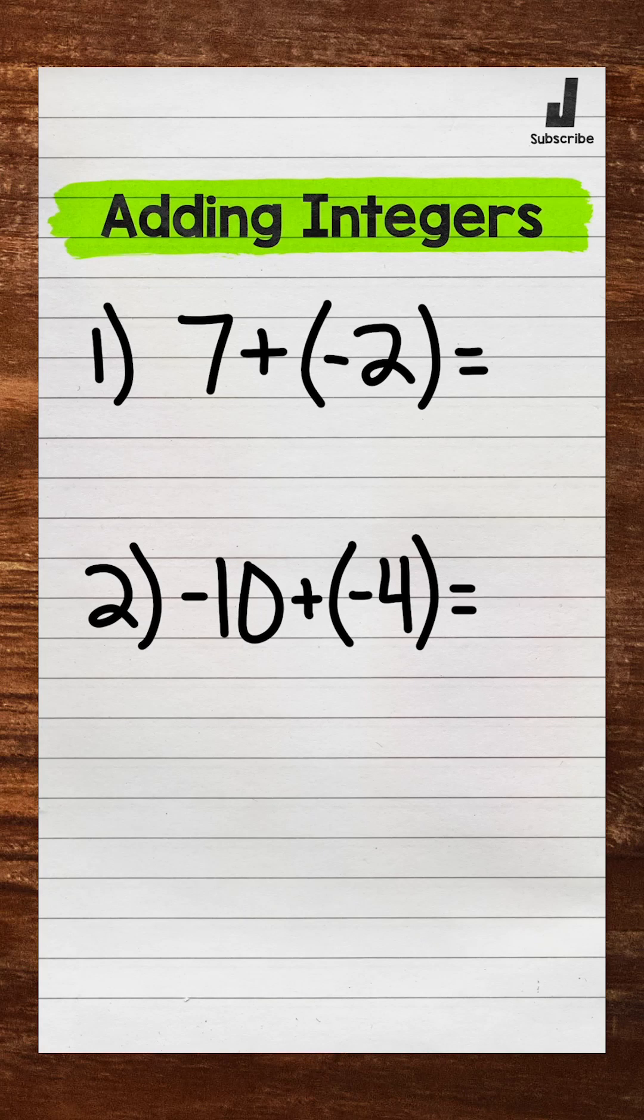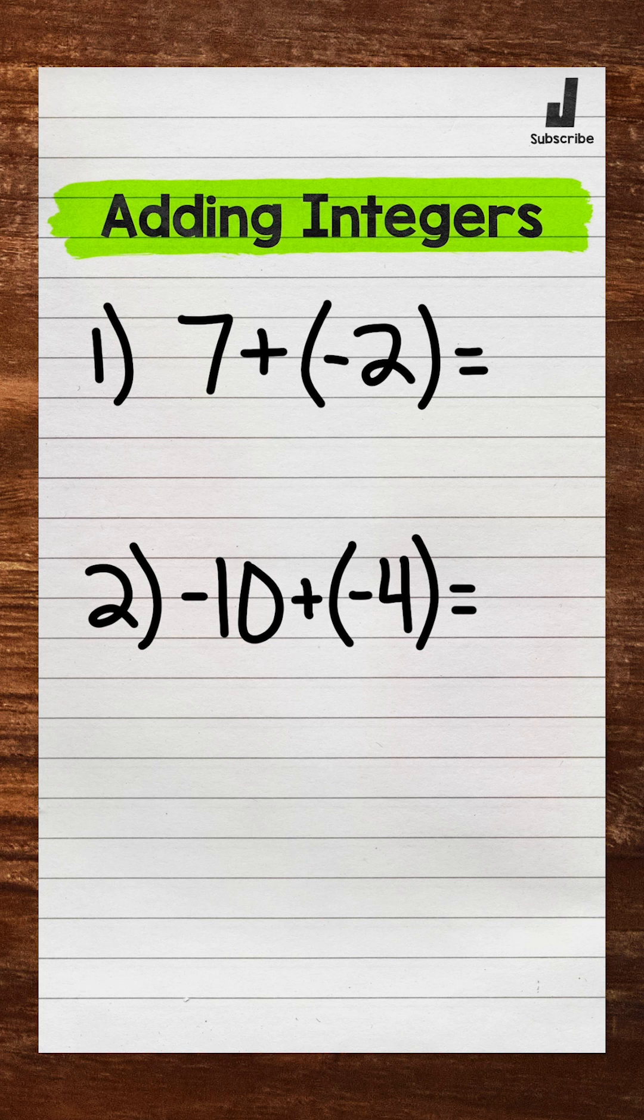This is Math with Mr. J. Let's add integers. When we add integers, we need to think about our starting point - the number we are starting with - and then where we are going from that starting point.